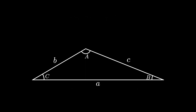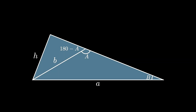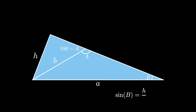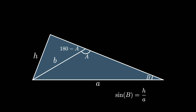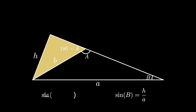Now we can do a similar thing for the angles A and B, but this time we have to be a little more careful. When we try to drop an altitude from the vertex at angle C, we see that we get a new triangle created outside the original. We can label this altitude H, and note that the newly created outside triangle has an angle of measure 180 degrees minus A, the supplementary angle to A. From this newly created right triangle, we see that the sine of angle B must be the opposite side length H divided by the hypotenuse A. From the small right triangle created here, we see that the sine of 180 degrees minus A must equal the opposite side H divided by the hypotenuse B.